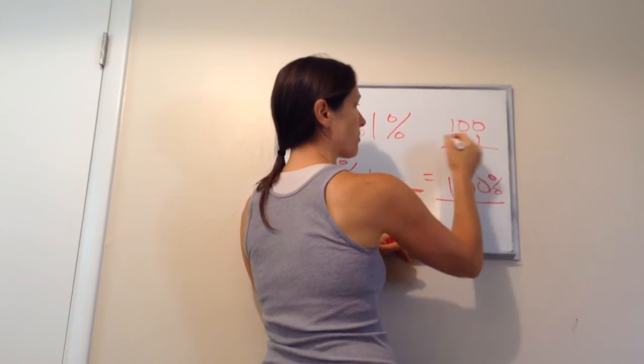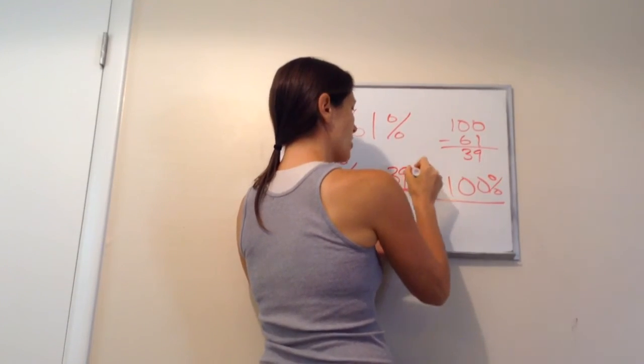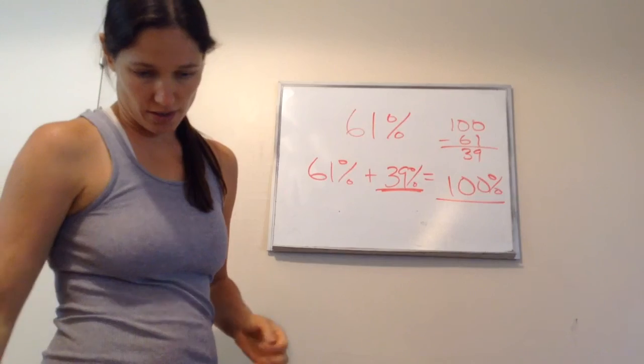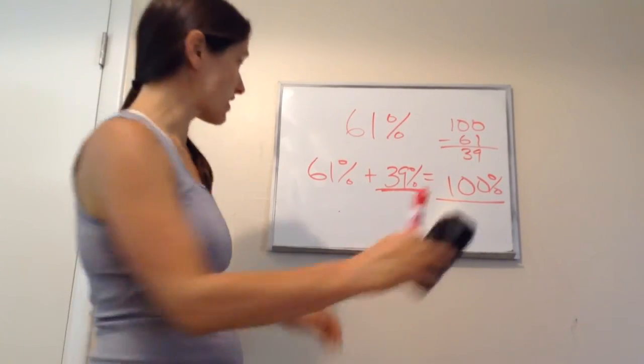And when we subtract 100 minus 61, we get 39. So, what percent of his answers were not right? 39%. That's lesson 14.